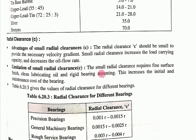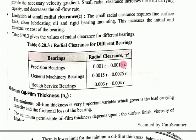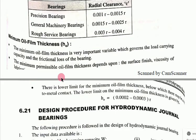Regarding radial clearance: it should be small enough to provide the necessary velocity gradient. Small radial clearance increases load-carrying capacity and decreases oil flow rate. The limitation is that small radial clearance requires fine surface finish, clean lubrication oil, and rigid bearing mountings, which increases the initial and maintenance cost of the bearing.